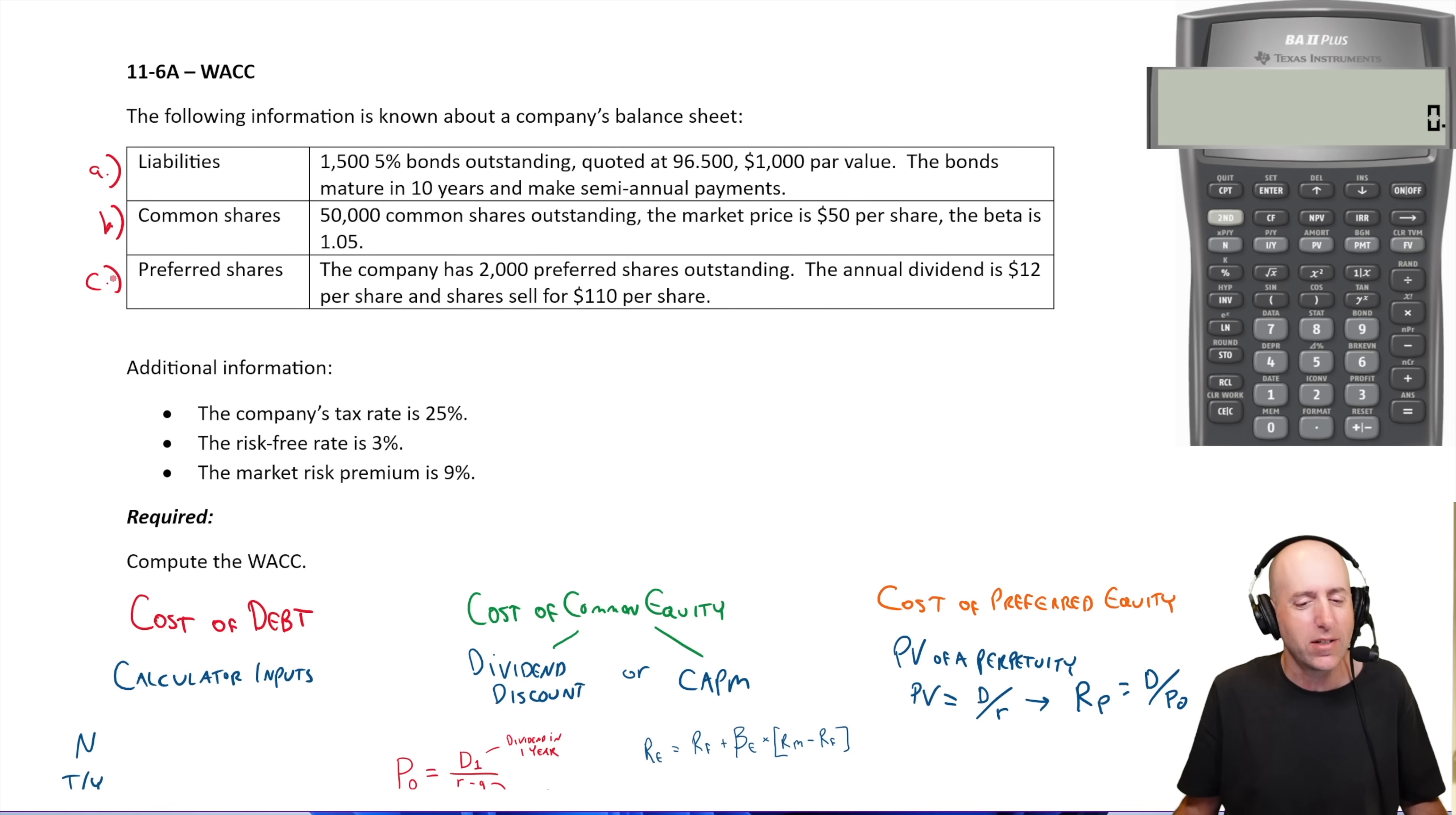Let's go. So the following information is known about the company's balance sheet. It gives us info about liabilities, common shares, preferred shares, and some tax rate info, risk-free rate, market risk premium. It says compute the weighted average cost of capital.